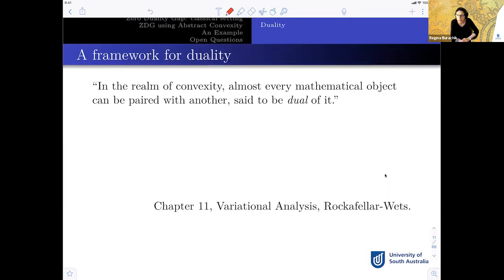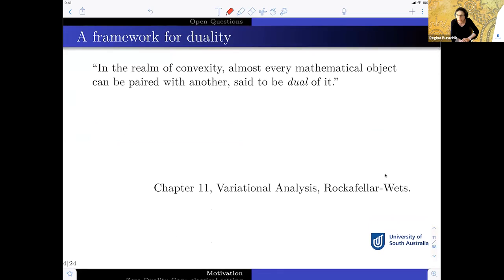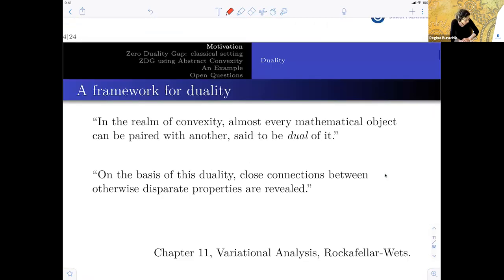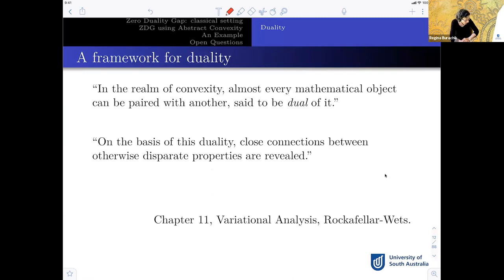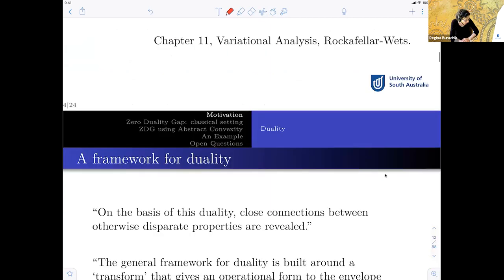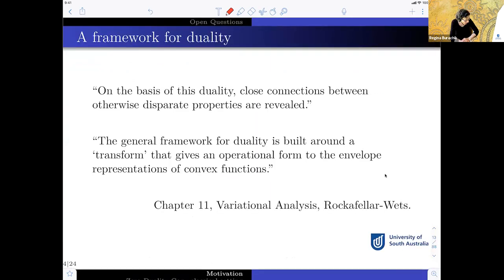I will start by recalling a beautiful sentence from Rockafellar and Wets' book, Variational Analysis, Chapter 11, the duality chapter — which I really recommend everybody enjoy. It says that in the realm of convexity, almost every mathematical object can be paired with another, said to be the dual of it. On the basis of this duality, close connections between otherwise disparate properties are revealed. The general framework for duality is built around a transform that gives an operational form to the envelope representations of convex functions — so everything revolves around this concept of the envelope representation of convex functions.